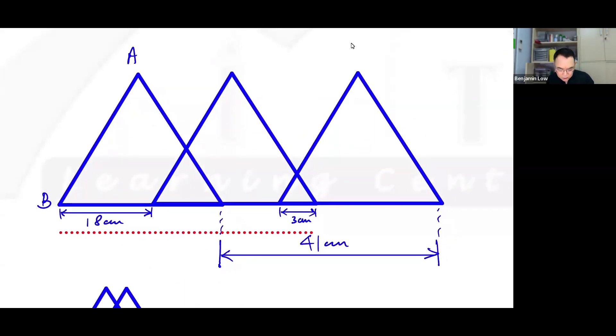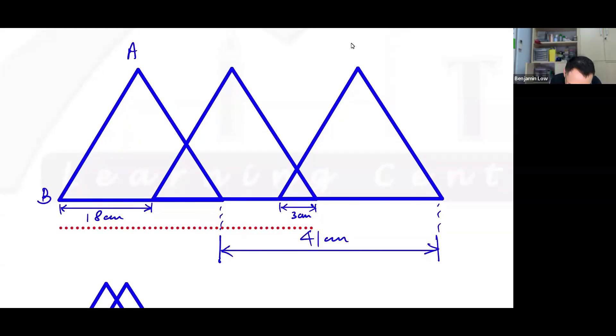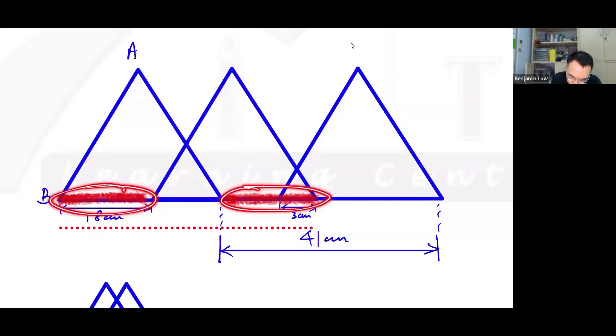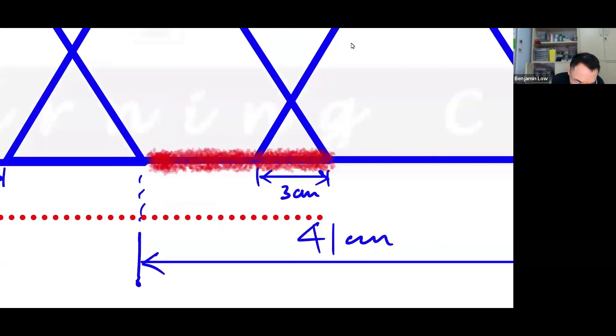Then we know that if this is 18, and maybe I will highlight this with a different color, if this is 18, then so is this, this red color portion would also be 18. They are the same, because effectively I am taking this triangle which started over here, and I shifted it so that it came over here. So the amount that I shifted here is the same as the amount that's here.